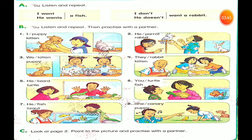Who can say number five? He, lizard, turtle. He wants a turtle. He doesn't want a lizard. Number six — you want a turtle. You don't want a fish. Number seven — he wants a fish. He doesn't want a lizard. Number eight — she wants a canary. She doesn't want a puppy.